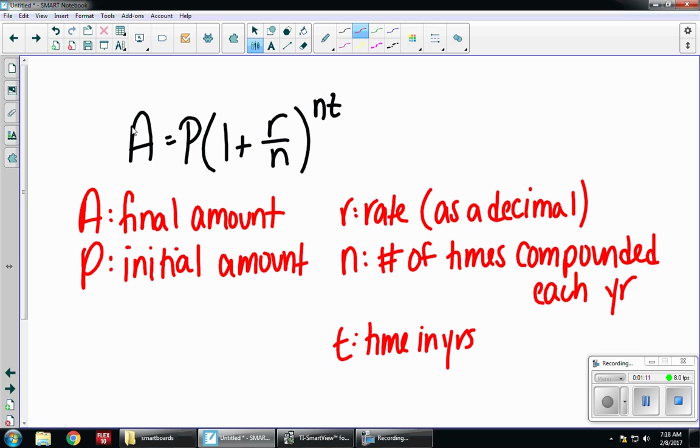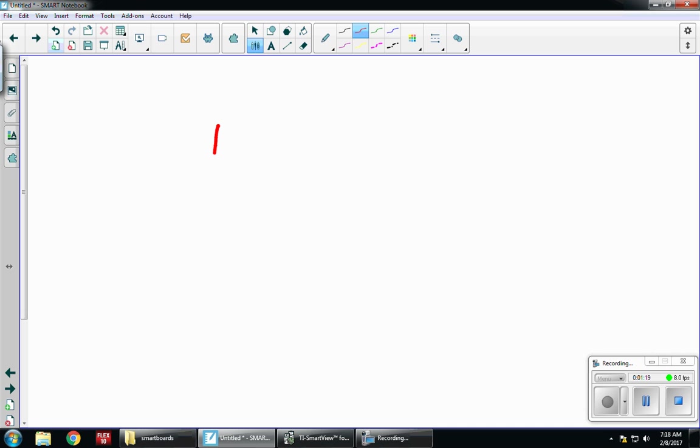So this is the first formula that you're going to be seeing. The next formula is A equals PE to the RT. This is whenever you see compounded continuously. So for this, A and P, R and T are all still the same. The only difference is the E. E is going to be the number in your calculator, unless they tell you otherwise. So you're not actually going to substitute for E. It's just going to be the number in your calculator, and we'll go through how to do that.